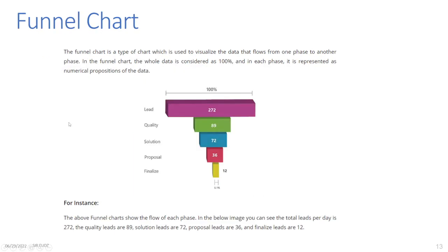Funnel Chart: The funnel chart is a type of chart used to visualize data that flows from one phase to another. In the funnel chart, the whole data is considered as 100% and in each phase it is represented as numerical proportions of the data. For instance, the funnel chart shows the flow of each phase — total leads per day: 272; quality leads: 89; solution leads: 72; proposal leads: 36; and finalized leads: 12.